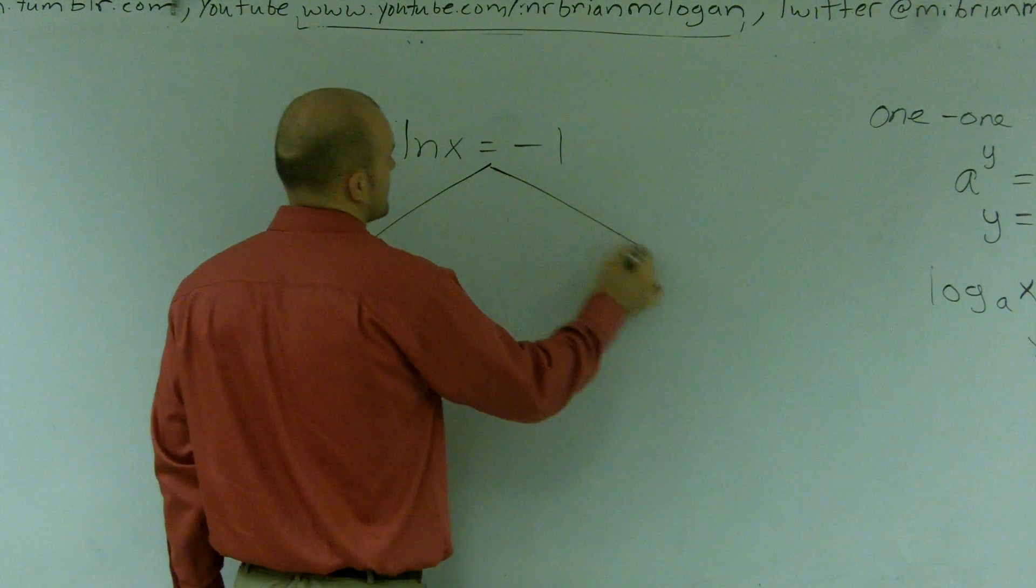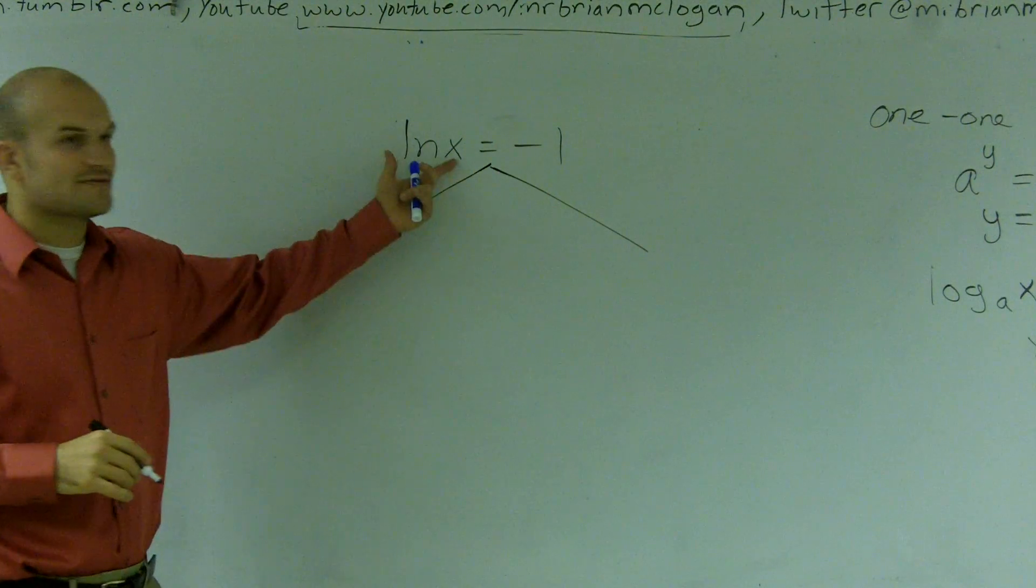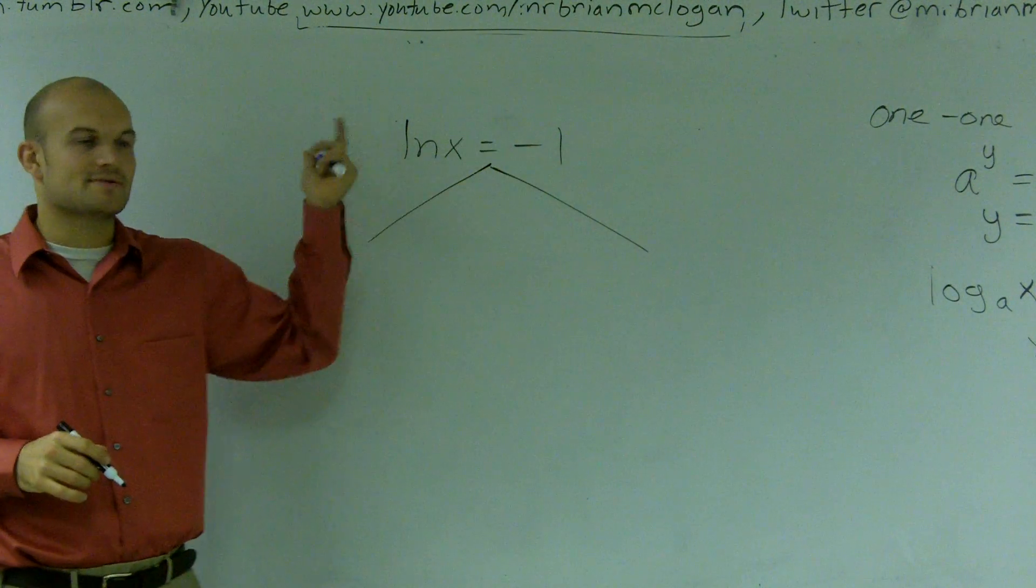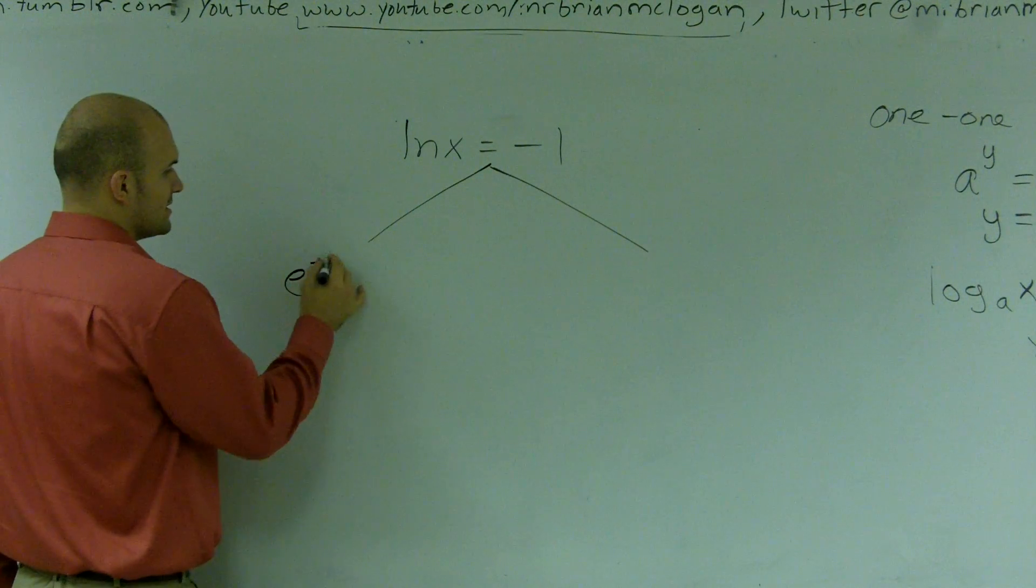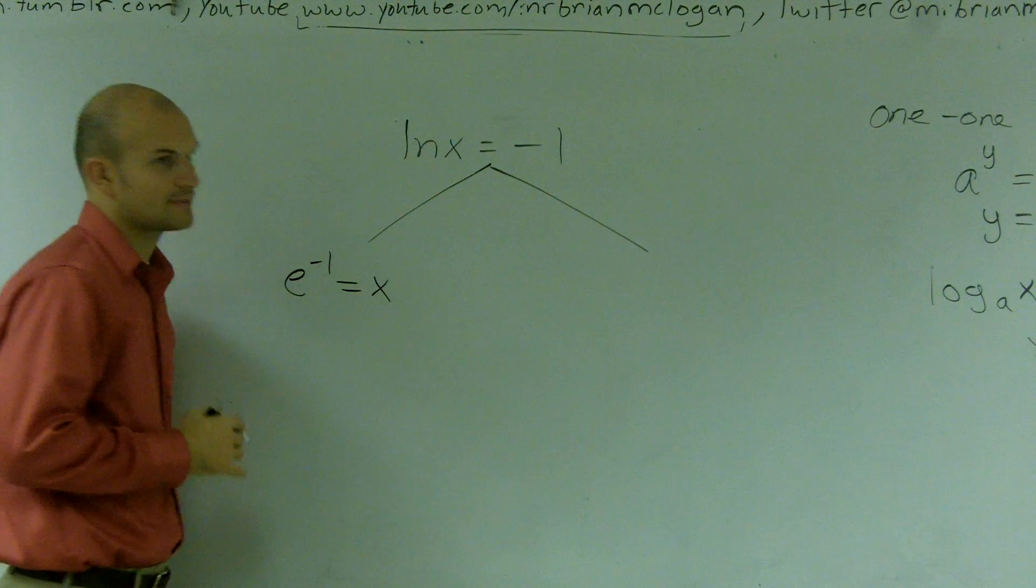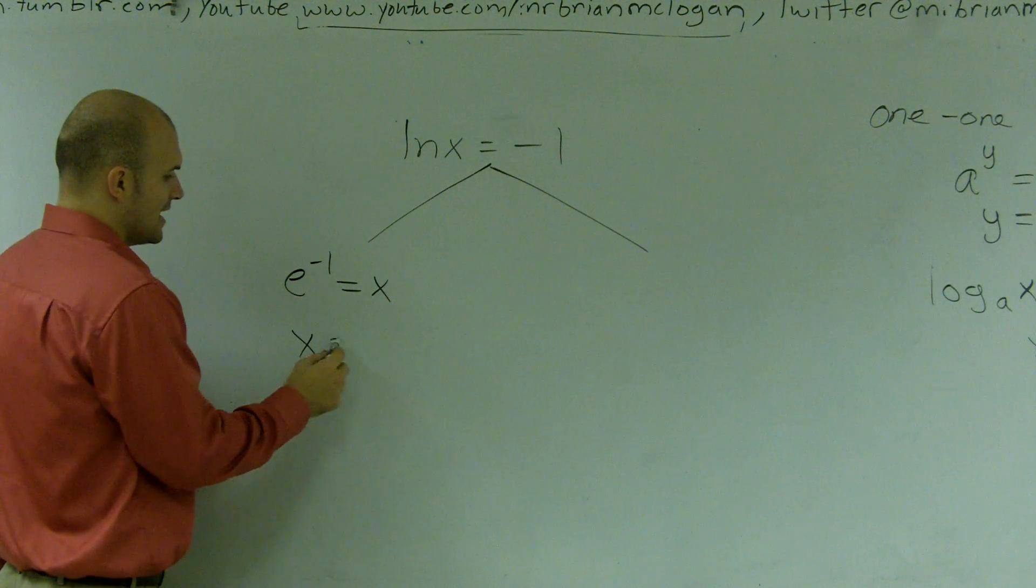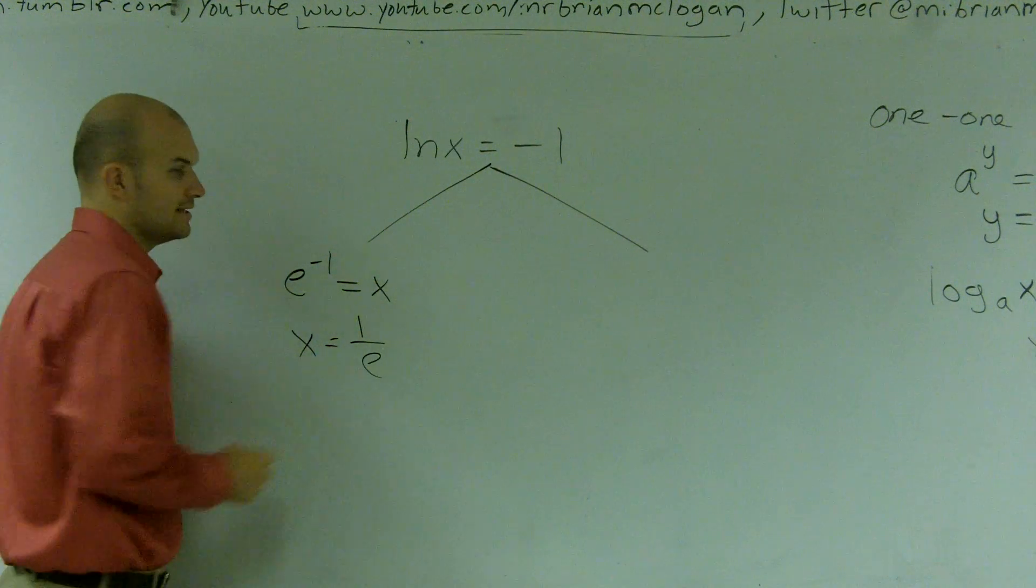The first way is just to transfer it to exponential form. You have a logarithm, transfer to exponential form. e to the negative first equals x. Then you can evaluate this as x equals 1 over e.